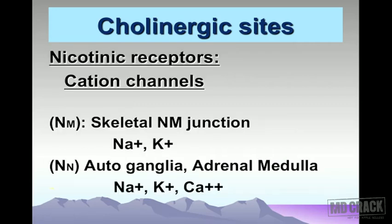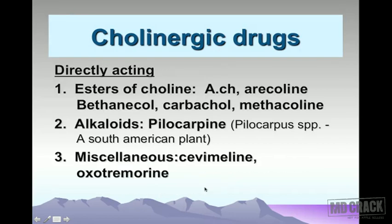The nicotinic receptor is a cation channel receptor. At the skeletal neuromuscular junction, you mainly have sodium and potassium cation channels. At the autonomic ganglion and adrenal medulla, you also have sodium, potassium, as well as calcium channels.